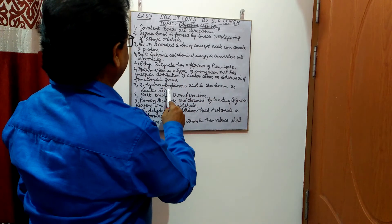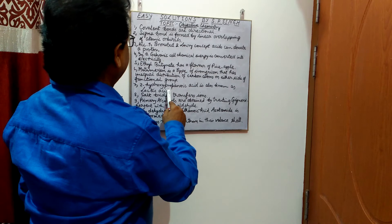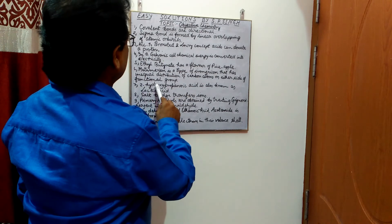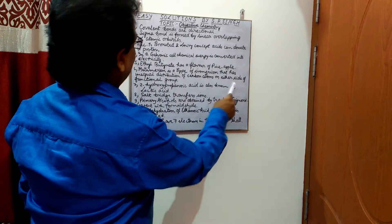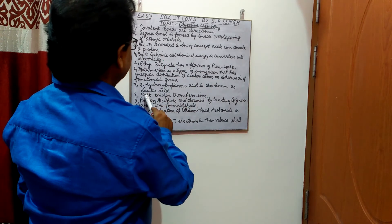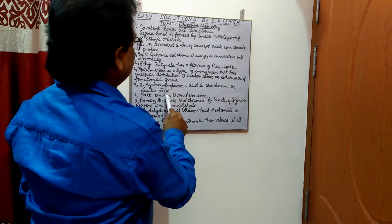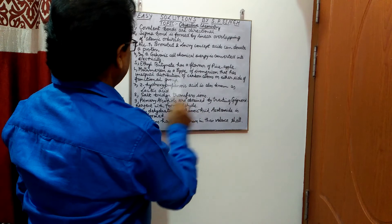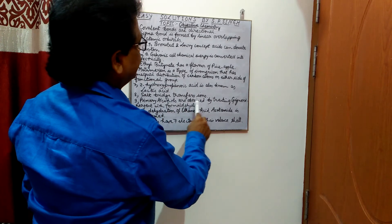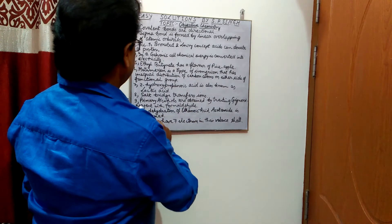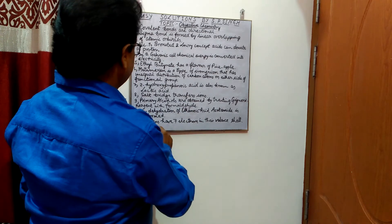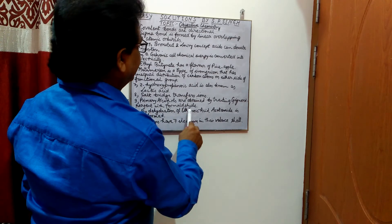2-hydroxypropanoic acid is also known as lactic acid. Salt bridge transports ions. Primary alcohols are obtained by treating a Grignard reagent with formaldehyde.